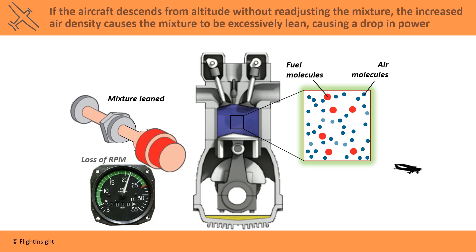If the aircraft descends from altitude without readjusting the mixture, the increased air density then causes the mixture to be excessively lean, causing a drop in power. Air-cooled engines are especially dependent on oil circulation for internal cooling. Excessively high engine temperatures will cause loss of power, excessive oil consumption, and possible permanent internal engine damage.